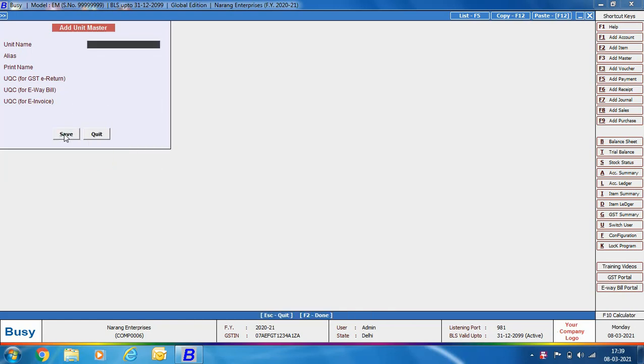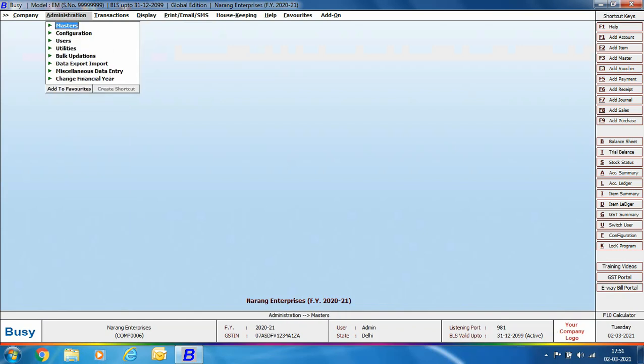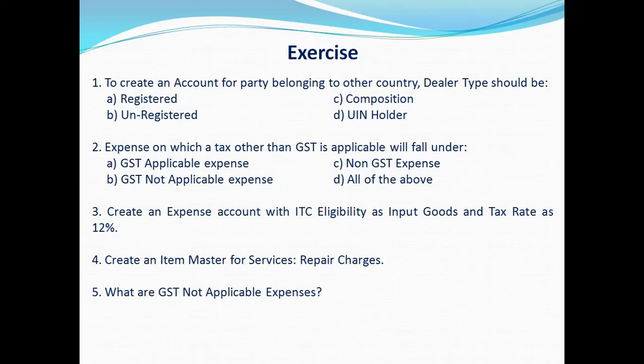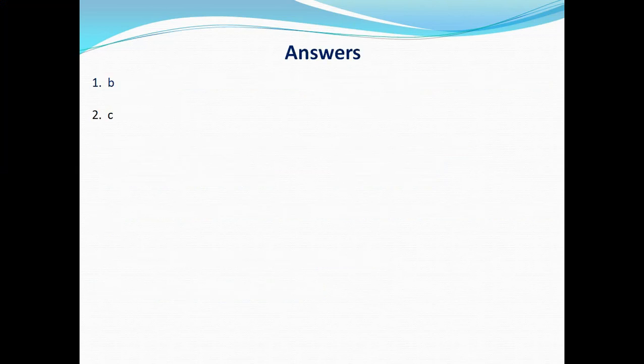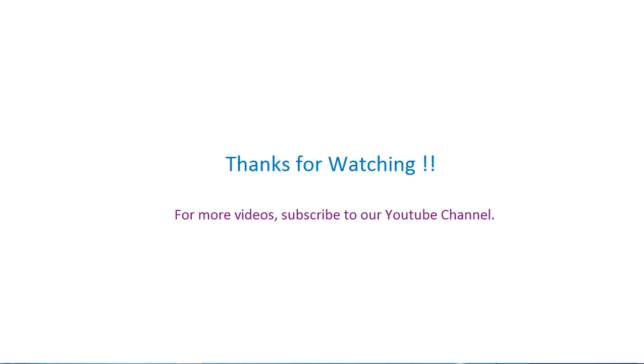This is all we have discussed in this chapter — account master, item master, and unit master. At the end of the chapter, exercises have been provided which you can view on screen and attempt. After going through this chapter, you should be able to easily create and use account masters, item masters, and unit masters in Busy. Thanks for watching — for more videos, subscribe to our YouTube channel.